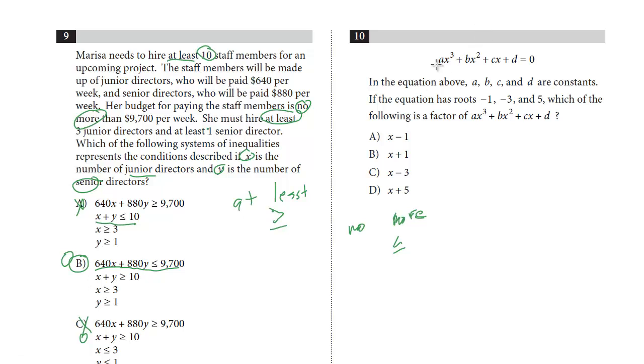And number 10. We have this polynomial in the equation above, a, b, and c are constants. If the equation has roots negative 1, negative 3, and 5, which is a factor of this polynomial. So this is really, these are specific words of art that have very special meanings.